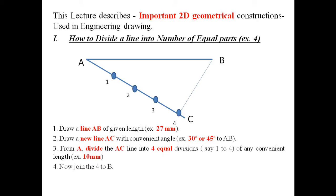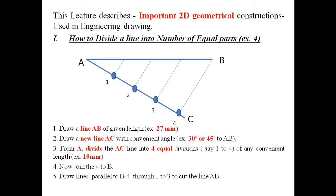Now join point 4 to B. Draw lines parallel to B4 through points 1 to 3 to cut the line AB. The points 1', 2', 3', 4' show that line AB is divided into four equal parts.